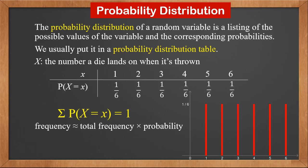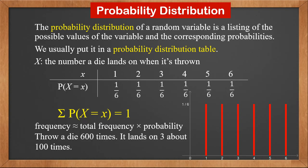If we carry out the experiments, the frequency is approximately total frequency times probability. For example, if we throw a die 600 times, it'll land on 3 about 100 times — not exactly 100 times. This is because those probabilities are theoretical. In the real world, the number will always be off more or less, and the more experiments you carry out, the closer the probability will get to the theoretical value.